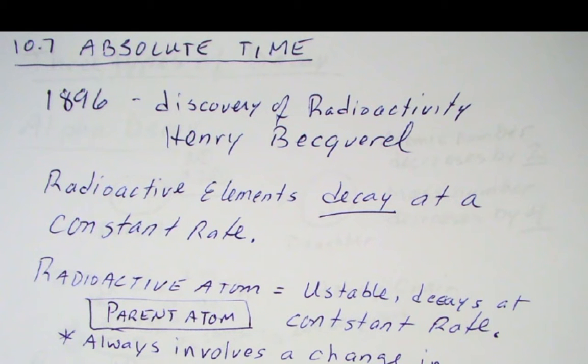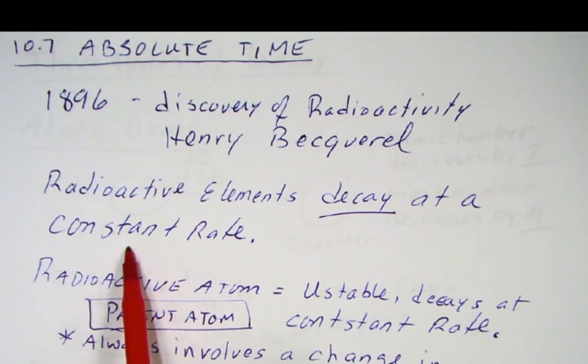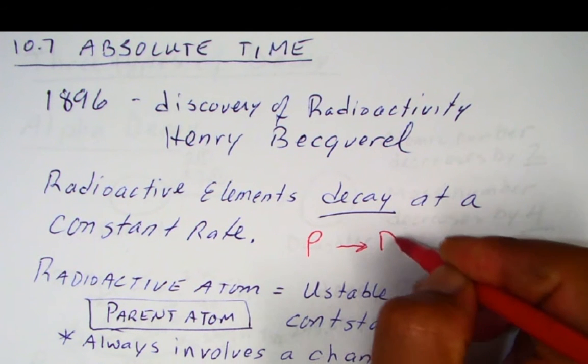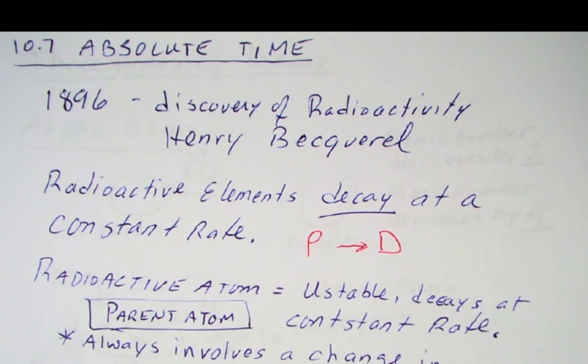And especially by the works of Marie Curie, one of Becquerel's grad students, were able to determine how to use radioactivity to come up with ages. Because one of the things about radioactive elements is that they decay at a constant rate. So in other words, they start off from some, usually we talk about some parent atom decaying to a daughter atom. So it's always parent to daughter.